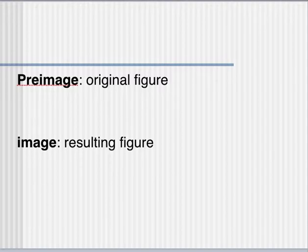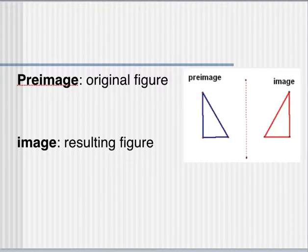We call the original shape the preimage, and the shape that results after any sort of move or change to the figure, the image. So some examples. Here we have a preimage, the blue triangle. So after the triangle is reflected or flipped over this dotted line, we have the image, the result. It's congruent to the first. It's just facing a different direction and at a different location.